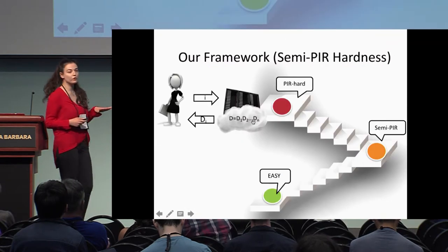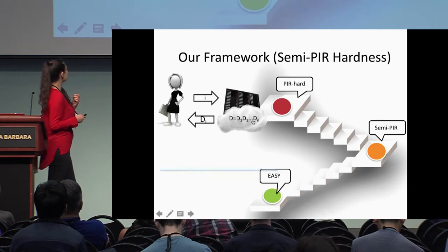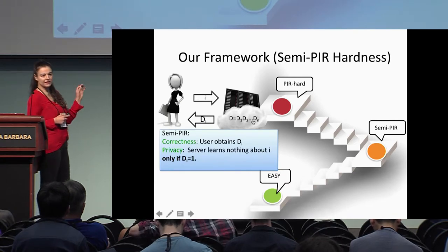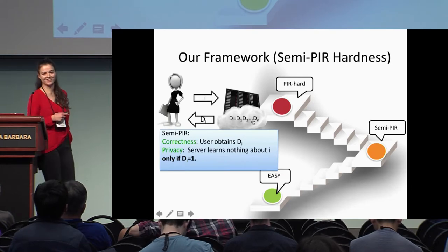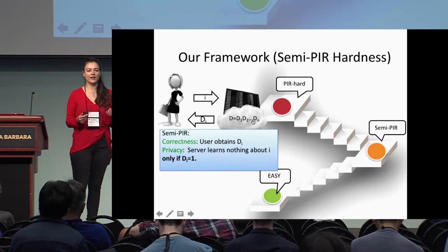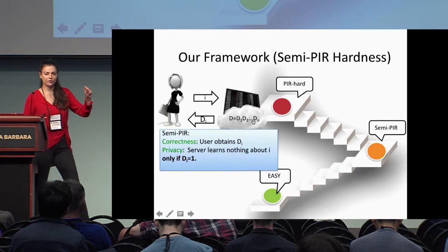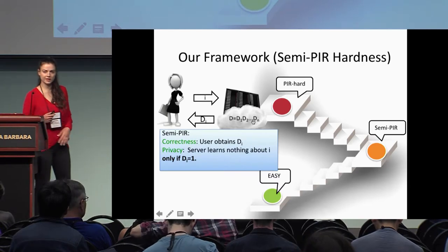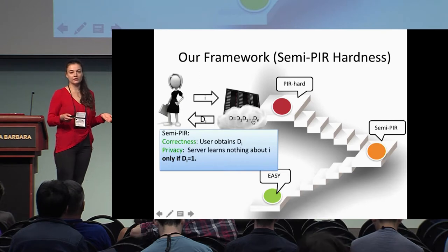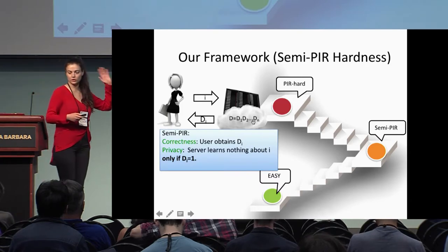Based on this example, we define semi-PIR hardness, which is a relaxation of PIR-hardness where privacy holds only if the element in the database is one. If the element is zero, the server learns the location i of the client — there's asymmetry. This is useful for other examples too: suppose you have a list of candidates and are revealing the winning candidate. The winning candidate becomes public, but you want to hide the rest.